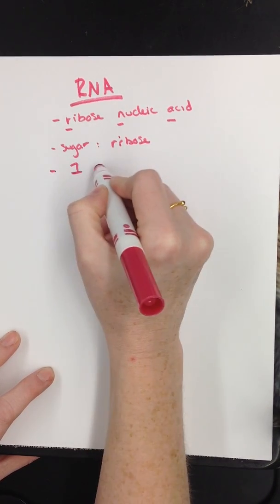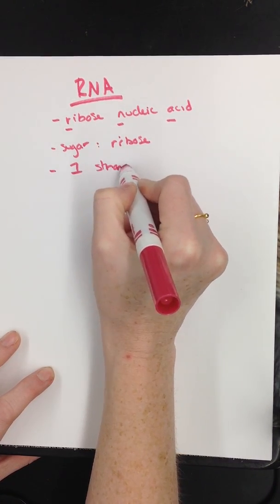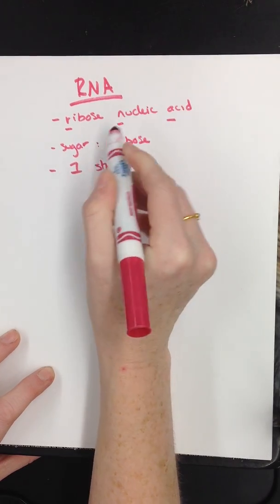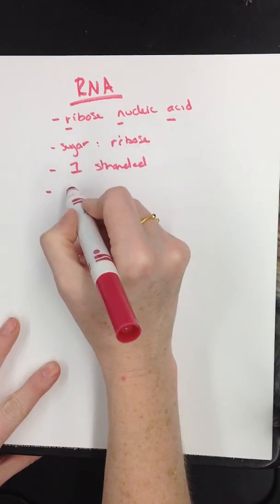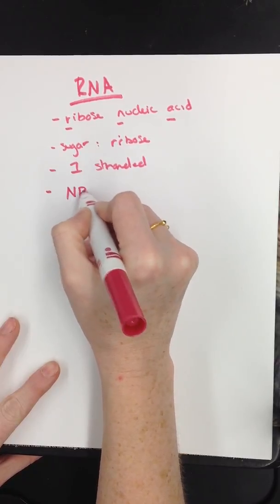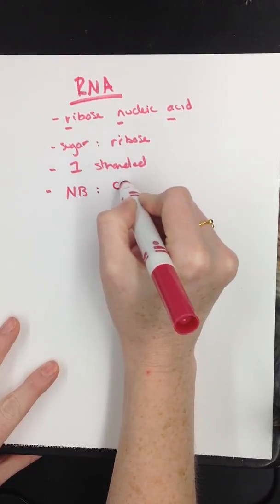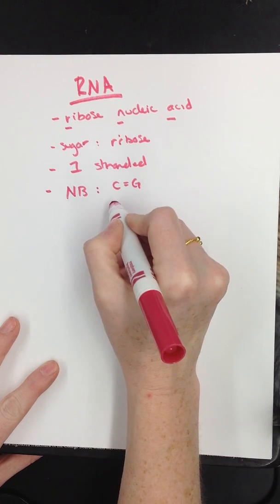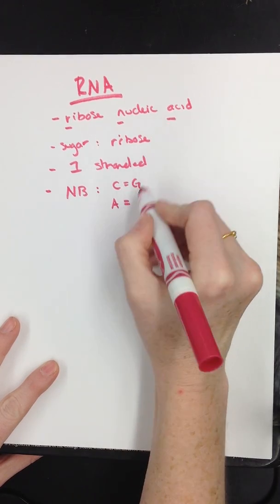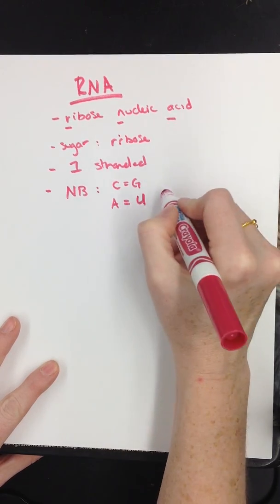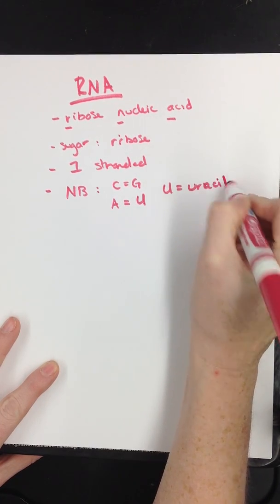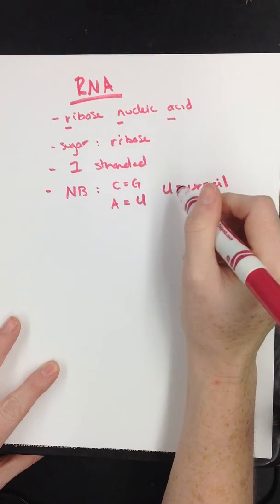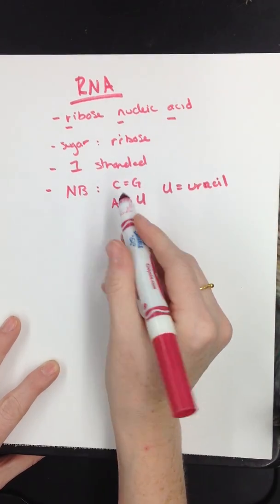The next thing, we'll talk about why. This is going to be a one-stranded molecule. His nitrogen bases, he differs a little bit. So he still has C's and G's going together. But now, A, instead of being paired with T, he pairs with U. U stands for uracil. And that's going to be one of the big differences between DNA and RNA.